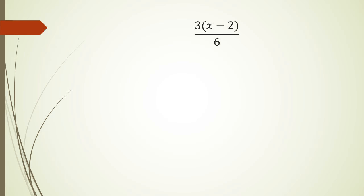What's happening here is we want to simplify this expression. I know that six is a common factor of three. So doing it the long-winded way: (3x minus 2) divided by 6 — the 3 in the numerator and the 3 factored from 6 cancel out, leaving you with (x minus 2) over 2.